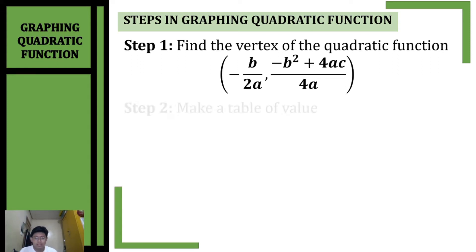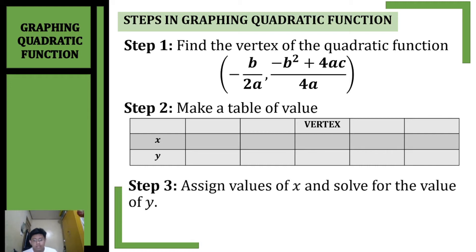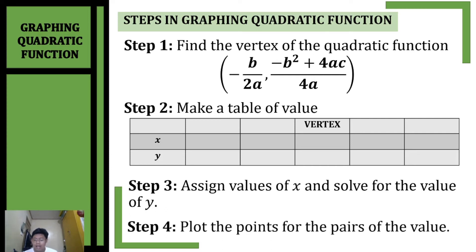The second step is to make a table of values. In your table of values, make sure to include the vertex. Step three, assign the value of x and then solve for the value of y. I suggest that when you assign values of x, make sure they are close to the x-coordinate of your vertex. The last step is to plot and then connect the points.